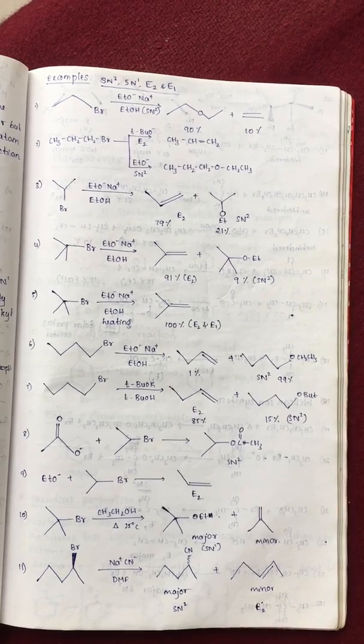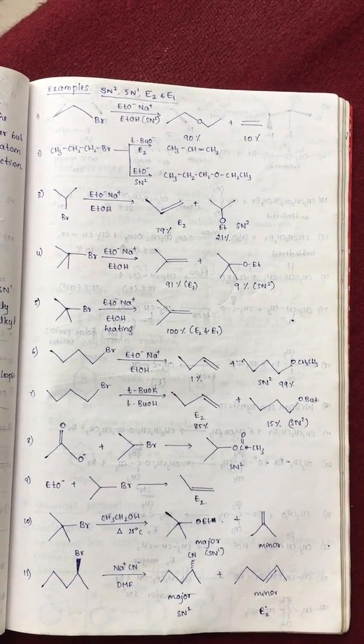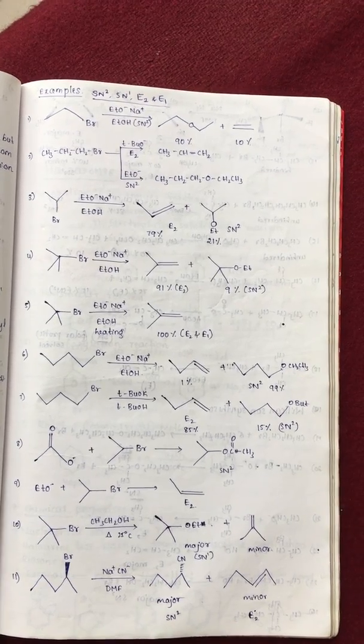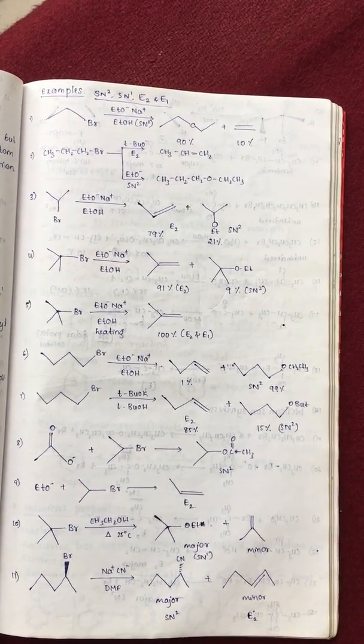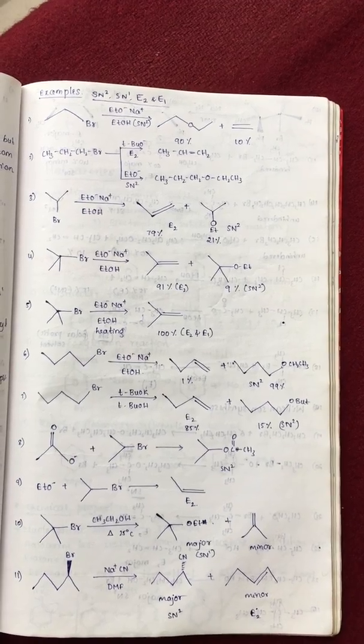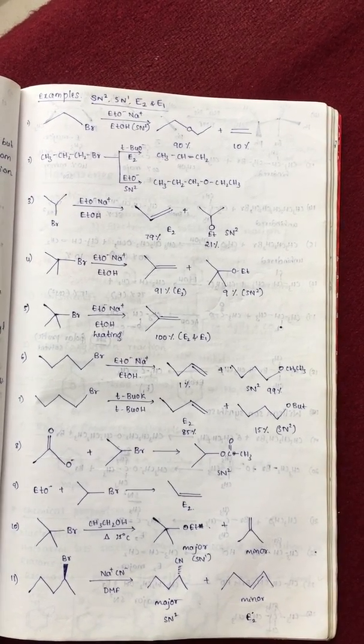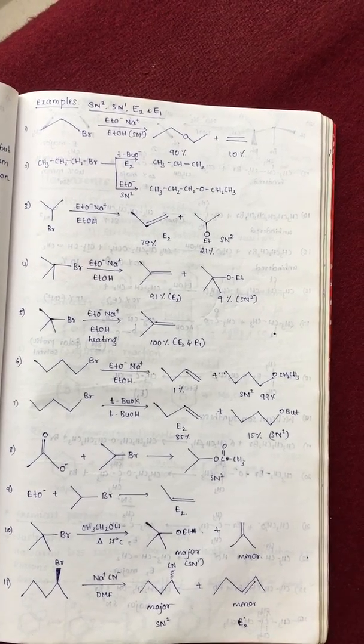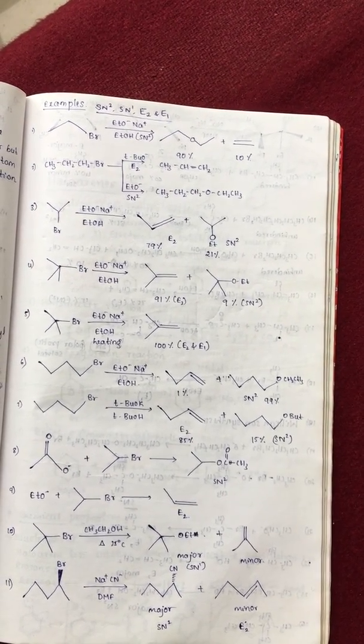Next, sixth example. Butyl bromide reacts with sodium ethoxide in ethyl alcohol. So, here elimination as well as substitution. So, it is primary alkyl halide. Therefore, this substitution is a major product than the elimination.